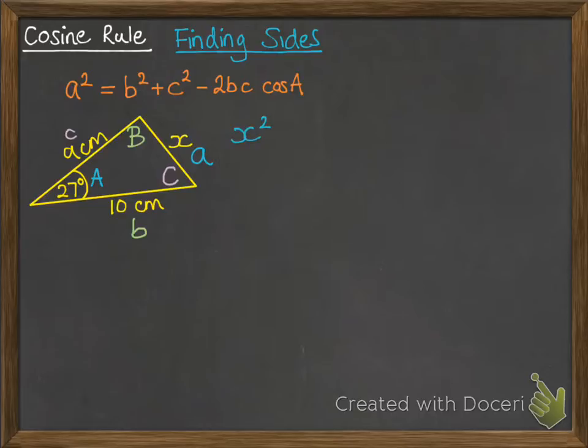Okay so start off with what a is and substitute into that formula. So in this case a is x that we're looking for equals, b is 10 so put in 10 squared.